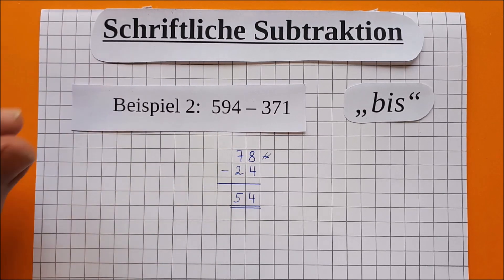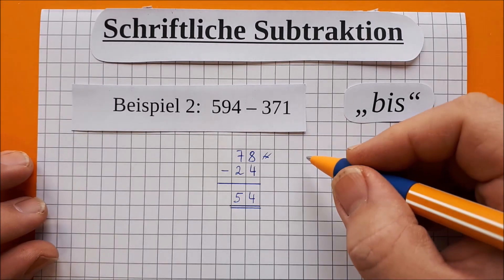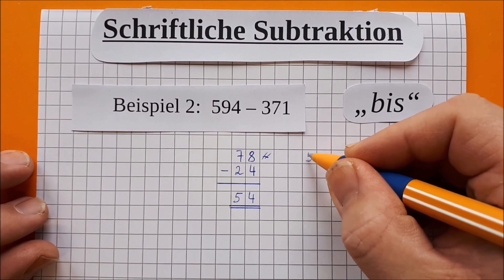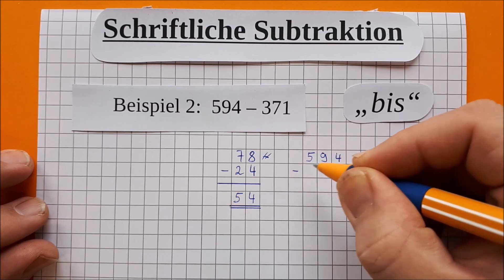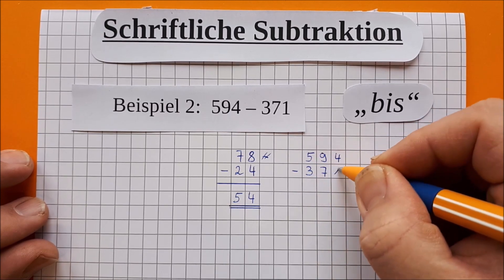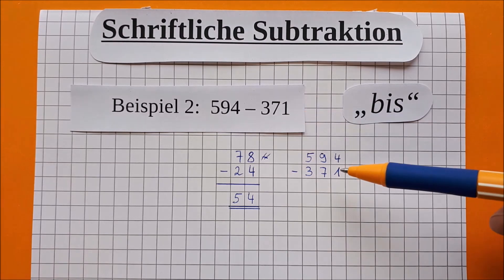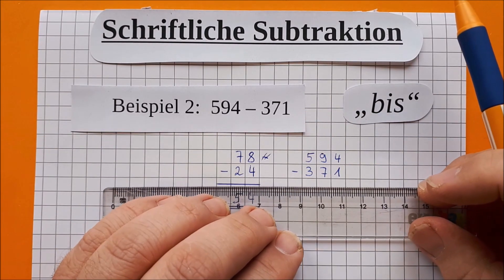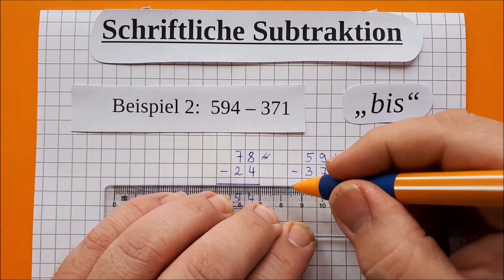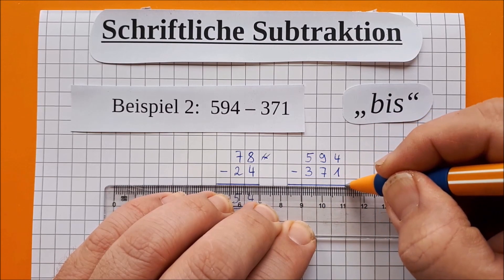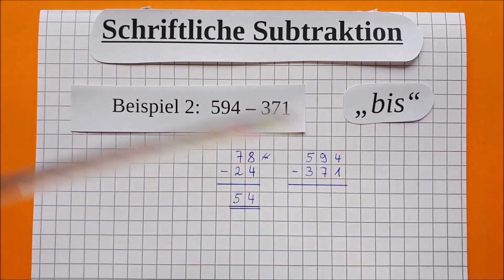Jetzt ist sie ein bisschen länger geworden. Macht nichts. Wir achten wieder darauf, dass es untereinander geschrieben wird. 594 minus 371. Aufgabe ist richtig. Der Strich wird wieder in die Mitte der Kästchenreihe gezogen. Das brauchen wir beim nächsten Schritt, wenn wir mit Übertrag rechnen. Jetzt brauchen wir das noch nicht.